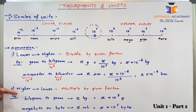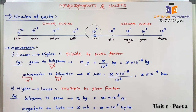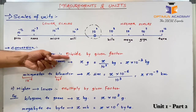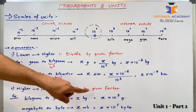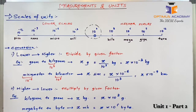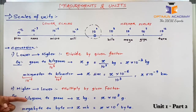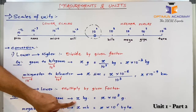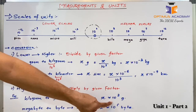Now, when we want to convert higher units to lower units, instead of dividing as we did before, we multiply by the given factor. For example, if I want to convert kilogram to gram, the factor for kilo is 10 raised to 3, so I multiply the value by 10 raised to 3.